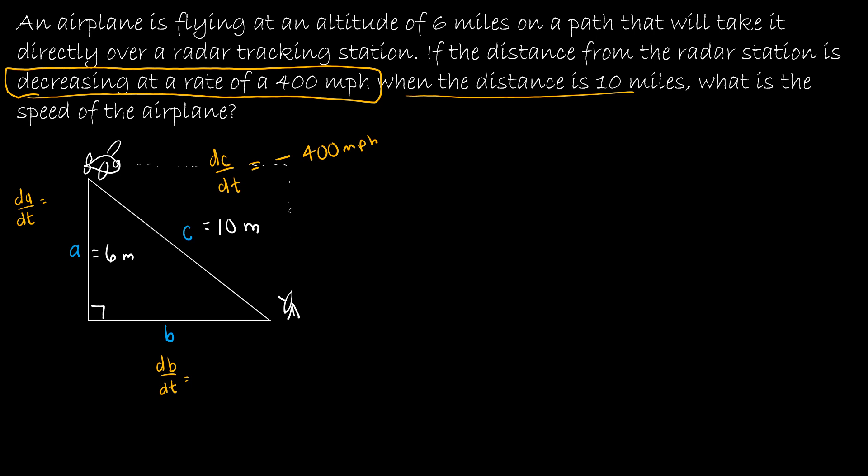So I'm trying to find the speed of the plane, which is the change in rate of B, DB/DT. I need to fill in anything that doesn't have two values. They don't tell me the altitude is changing, so DA/DT is zero. The only thing I'm missing is a value for B.